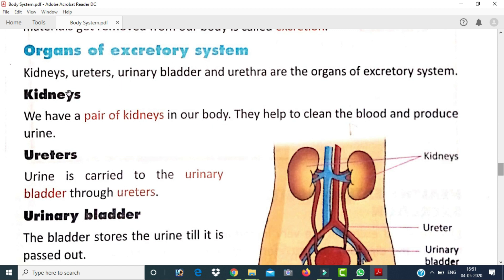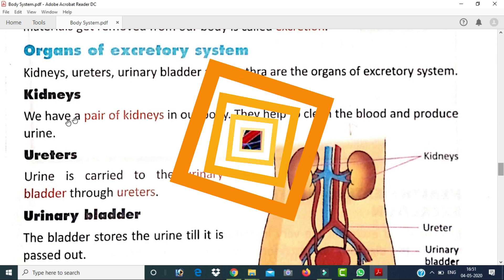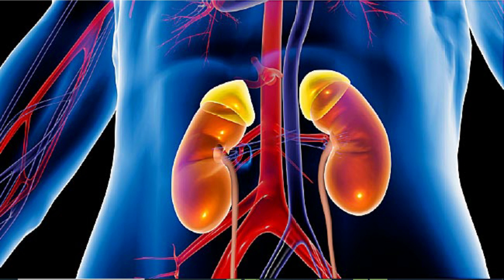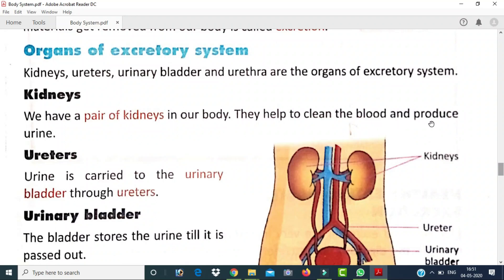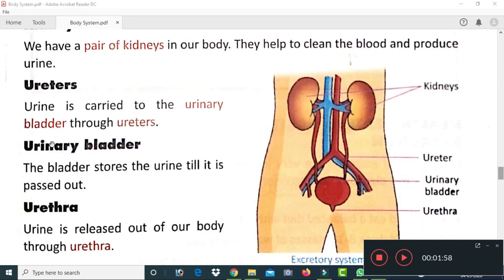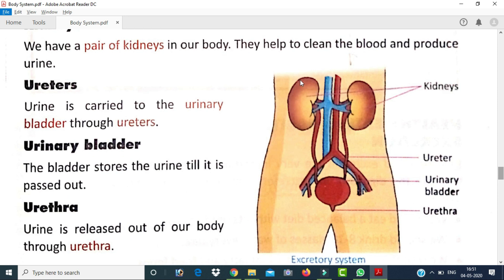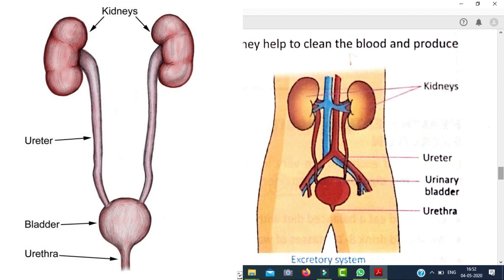The organs of the excretory system are the kidneys, ureters, urinary bladder, and urethra. We have a pair of kidneys in our body. They clean the blood and produce urine. The kidneys are bean-shaped, with one on the left side and one on the right side. Urine is carried from the kidneys to the urinary bladder through the ureters.